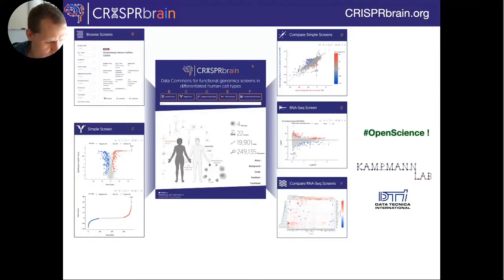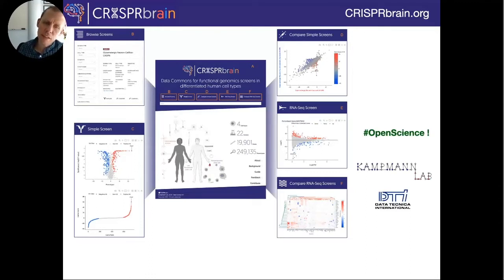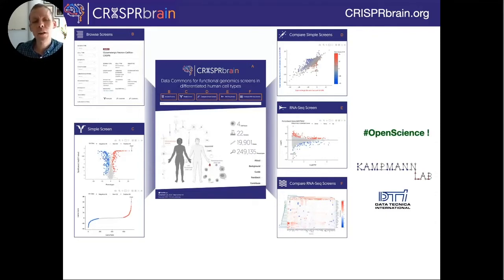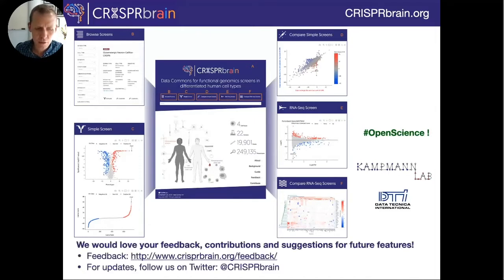I want to give a quick shout-out to a resource we created recently called CRISPR Brain — an open access database in which we are trying to compile screens done in differentiated human cell types, making it easy to compare side by side different phenotypes and gene function in different cell types. One of the things we're really interested in is how the same gene could have a different phenotype when knocked down in different cell types, and how that might be the basis for selective vulnerability of certain cell types to certain diseases. We'd love feedback from the community on features you'd like to see, and if you have datasets to contribute, we'd love to make this a data commons for the whole community.